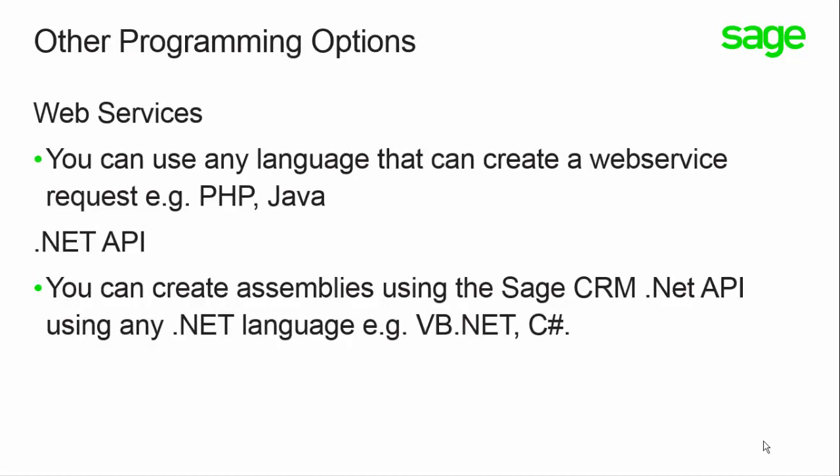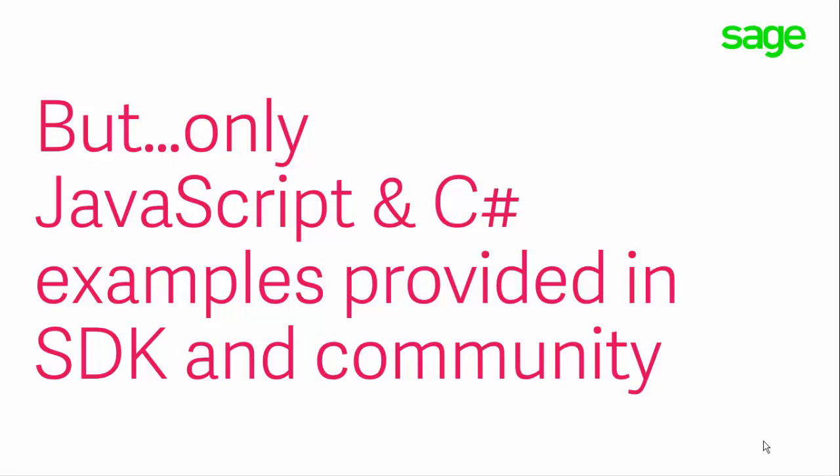We can use any language we want when working with the SOAP and RESTful web services. If we want to use either form of API, the only consideration is that the language should be able to create a web request — so if you're writing something outside of CRM, you might prefer PHP or Java. The .NET API allows extensions to be created in the main CRM interface using any .NET capable language. However, we only provide examples in C# within the documentation and training material. So only JavaScript and C# are provided inside the SDK and in the examples given on the community.